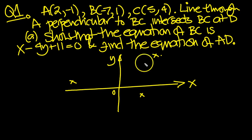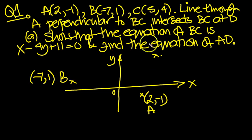Okay, so A is 2, -1. And here's A. B is -7, 1. This was B, wasn't it? And this was -7, 1. And C was 5, 4. So I'll put C here, and that's 5, 4.